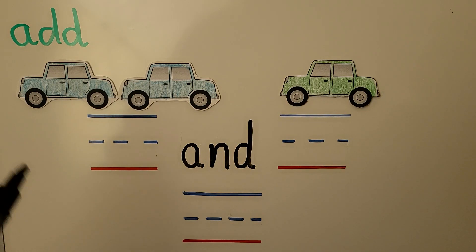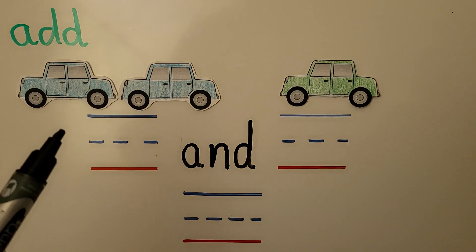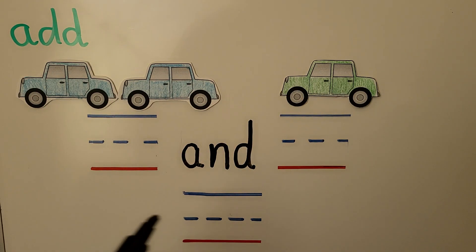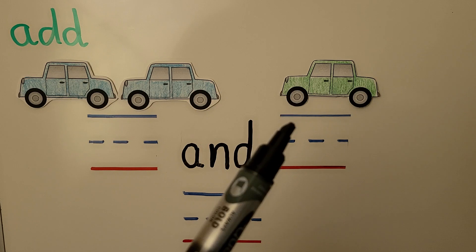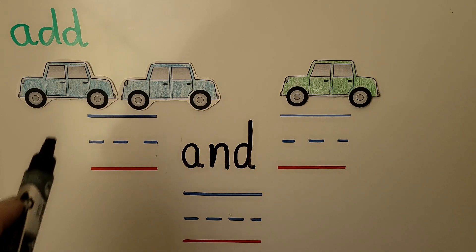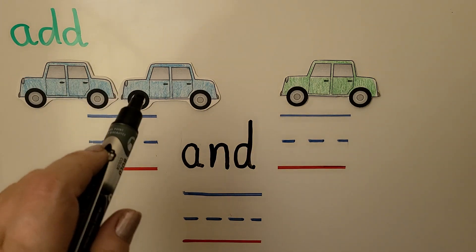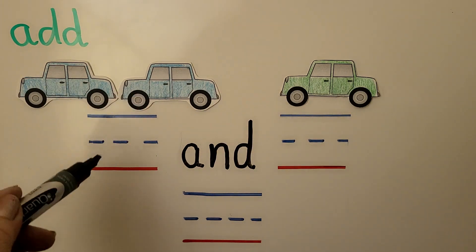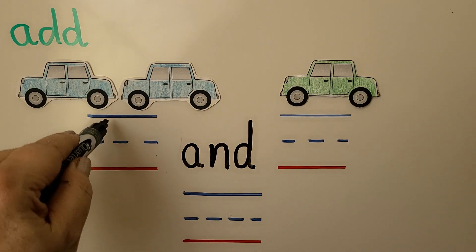There are two cars and one more car comes. How many cars are there now? We can write the numbers. We have one, two. We can write the number two.